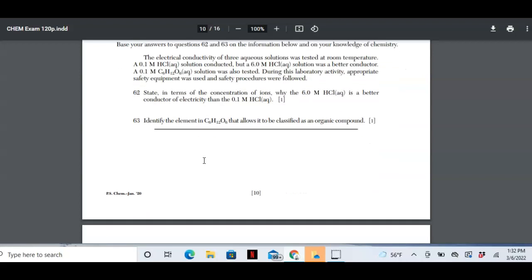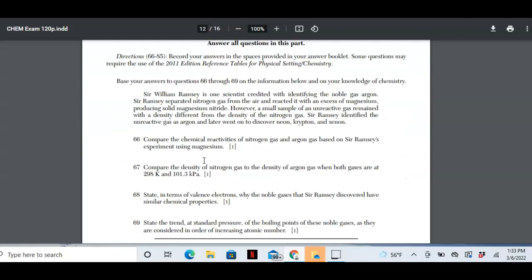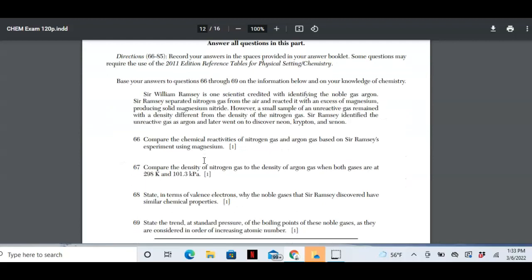When you get to part C, now you're dealing with questions that come through out the whole year, not just in one unit. So you're going to have questions from different units. For example, here, you were dealing with chemical reactivity, then we're dealing with density, then we're dealing with valence electrons. So the questions kind of pull from different parts of the course, all in a series of questions.